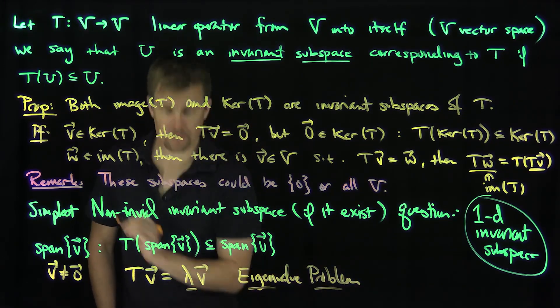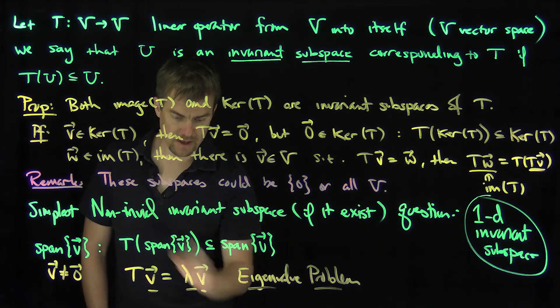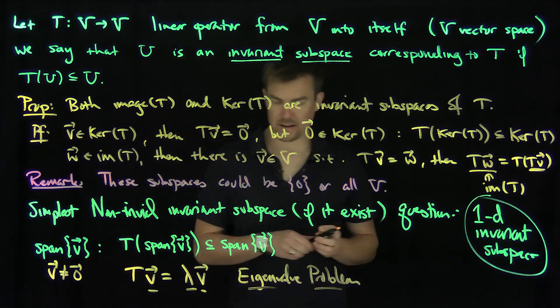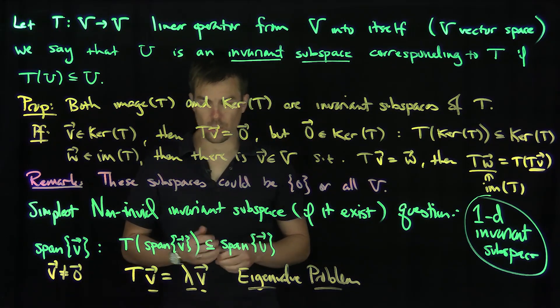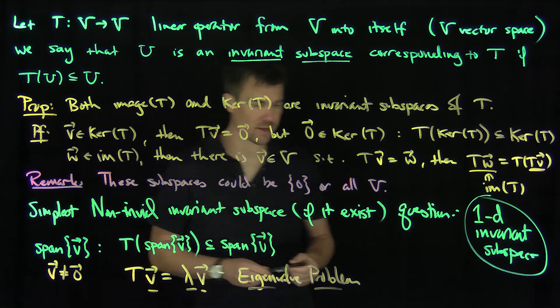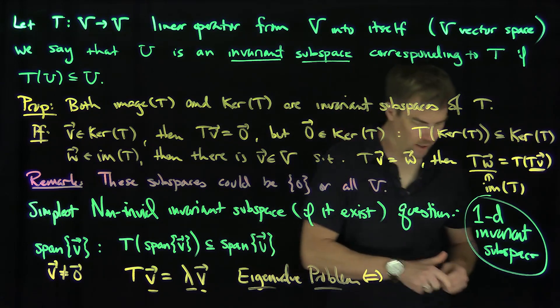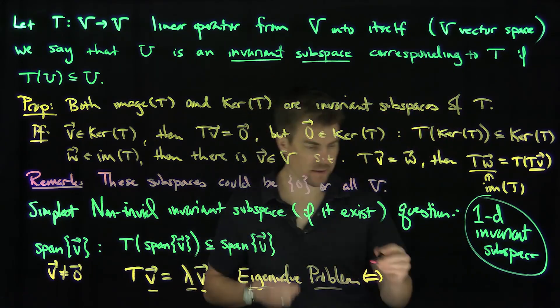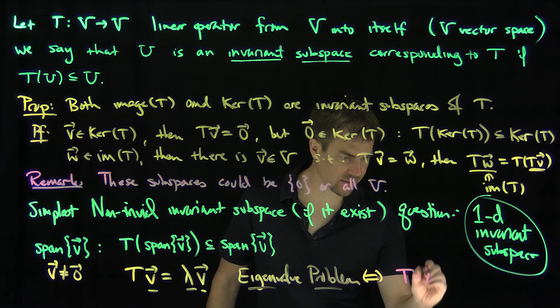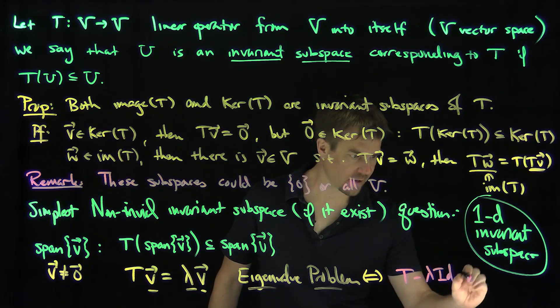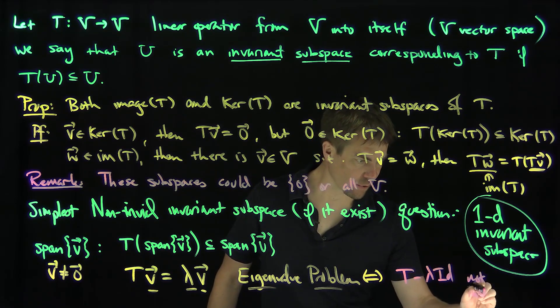Okay, so over here, lambda is the eigenvalue, and v is called the eigenvector. And of course, what is this condition equivalent to? This eigenvalue problem is exactly equivalent to the condition that T minus lambda identity is not invertible.